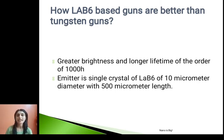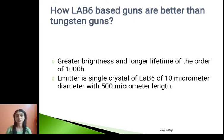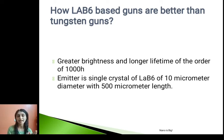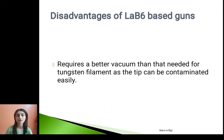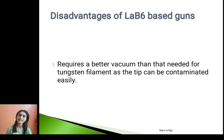LaB6 guns are better than tungsten guns because they have greater brightness and a longer lifetime of the order of 1,000 hours. The emitter used here is a single crystal of LaB6 of 10 micrometer diameter and 500 micrometer length, whereas in tungsten guns we have a tungsten wire. The disadvantage of LaB6 based guns is that they require a better vacuum than that needed for tungsten filament because the tip easily gets contaminated.